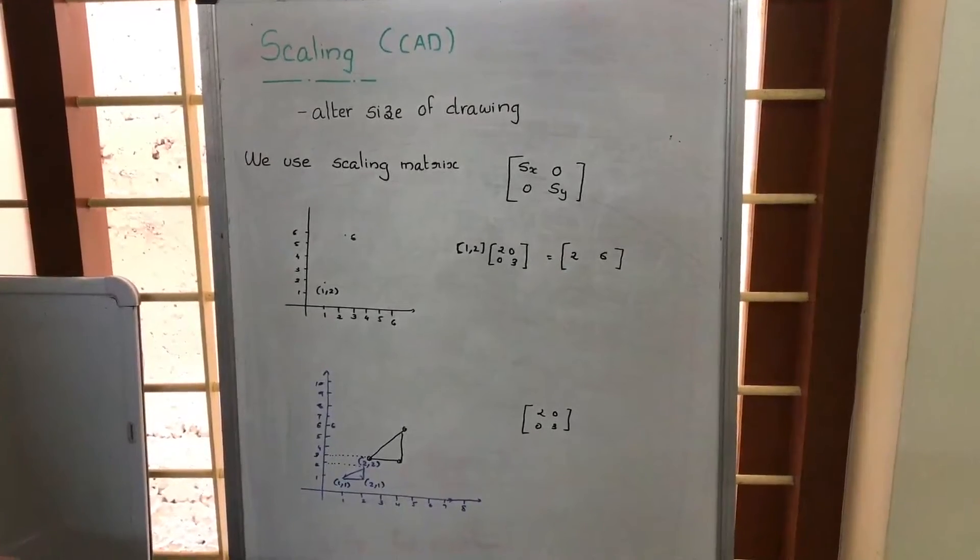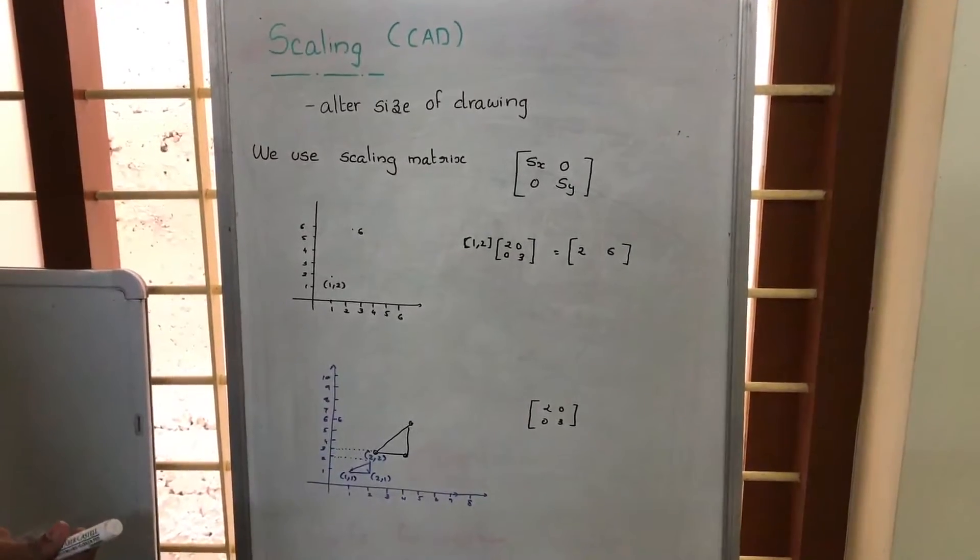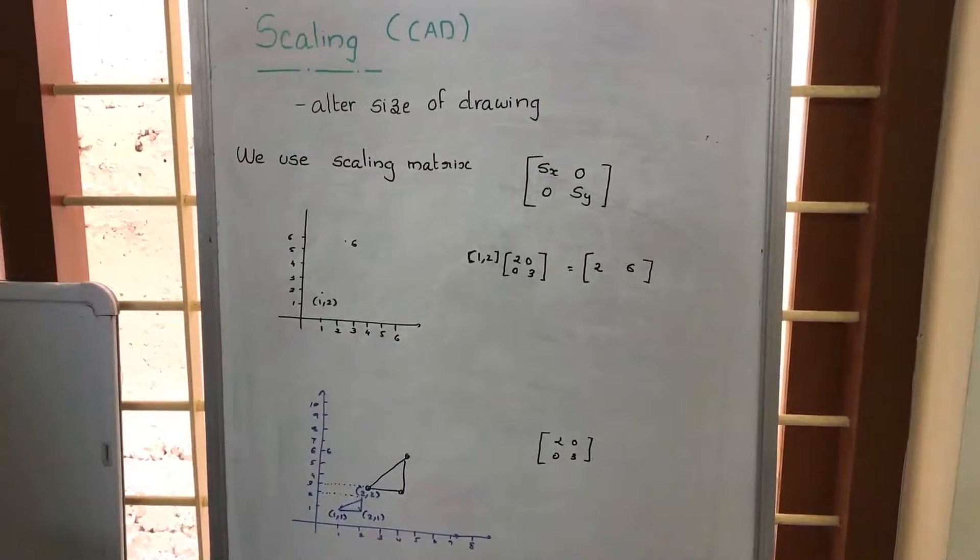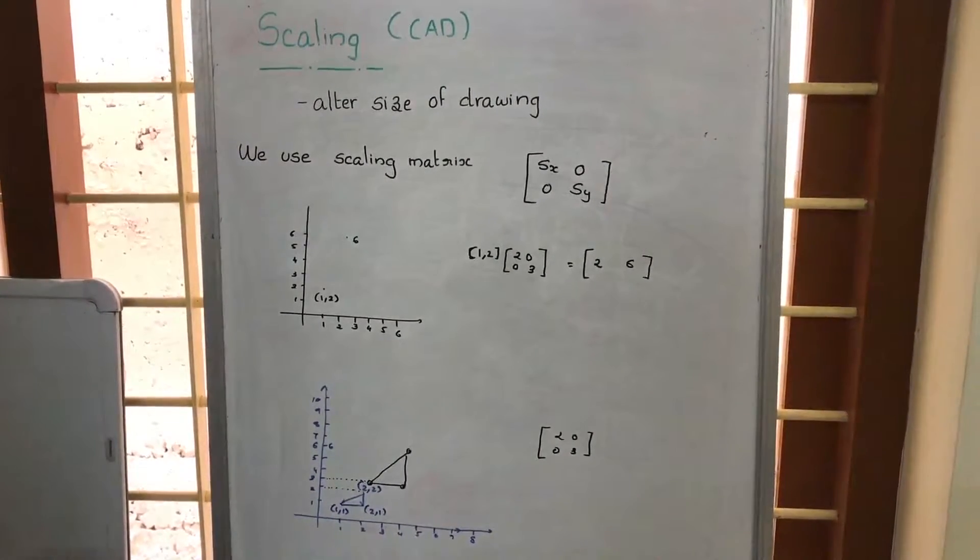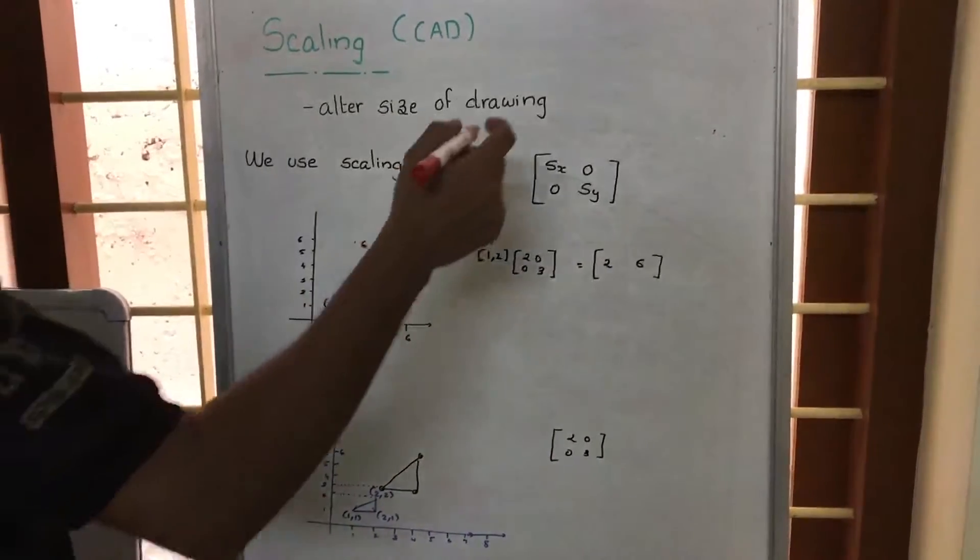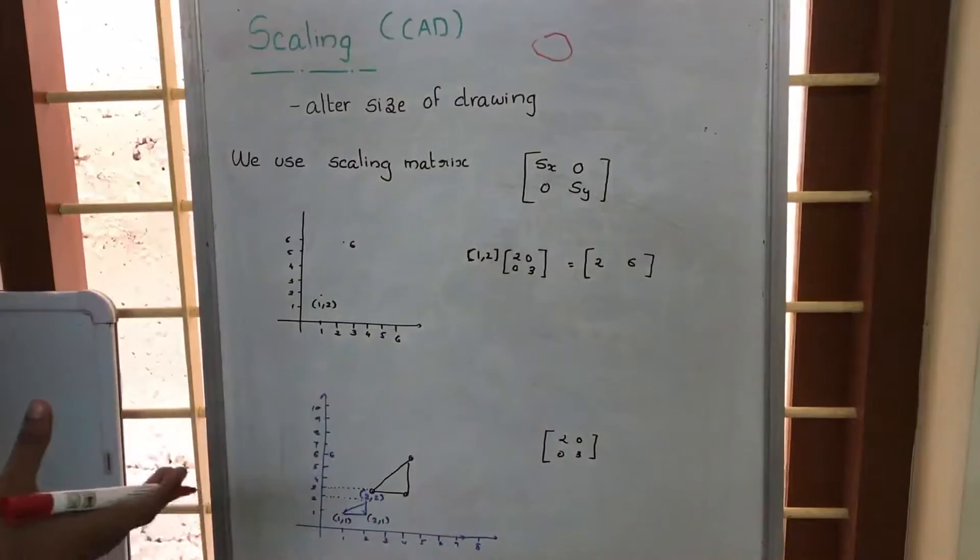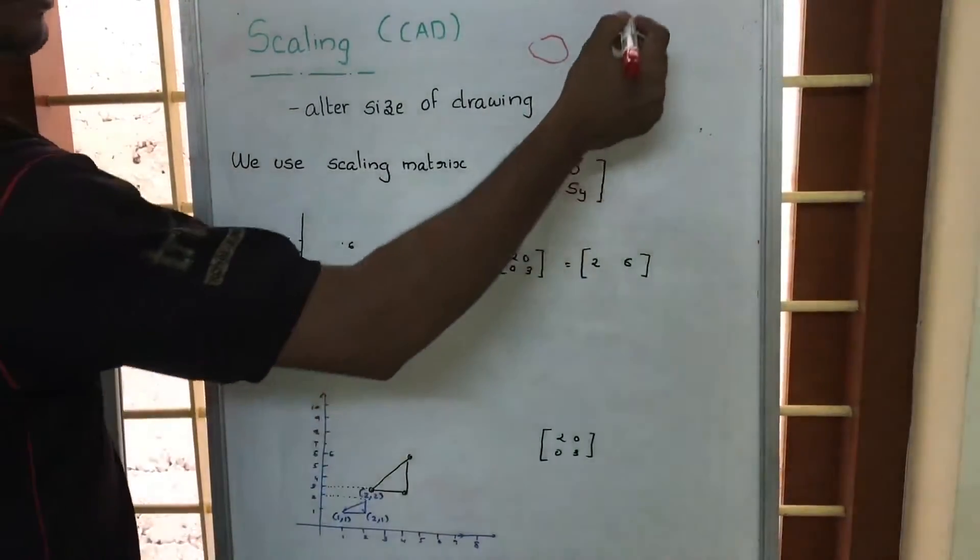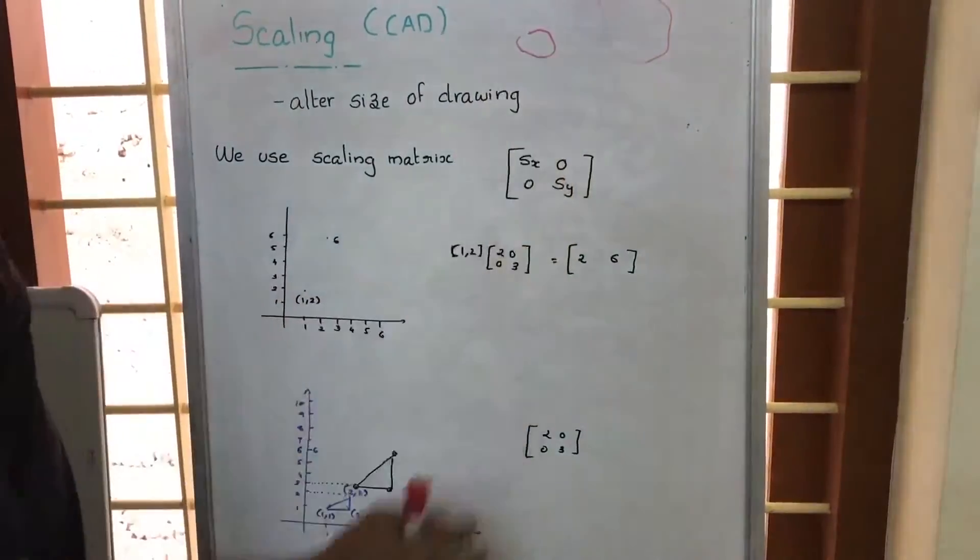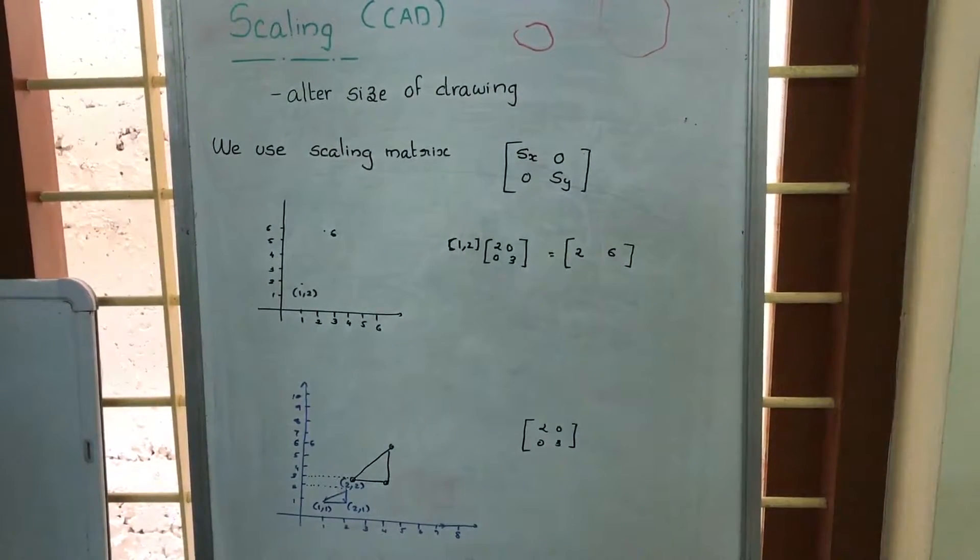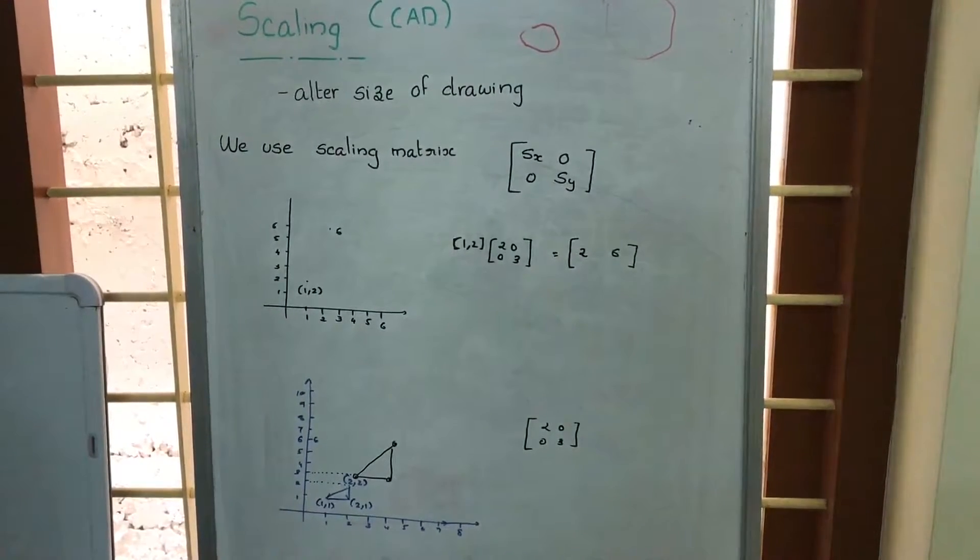In CAD we usually use scaling and it generally refers to altering the size of a drawing. That means suppose if we are adding some particular figure in CAD, by using the scaling matrix we are able to increase its size. So that particular process is being called scaling and first we will look at the scaling matrix.